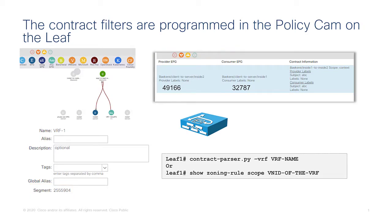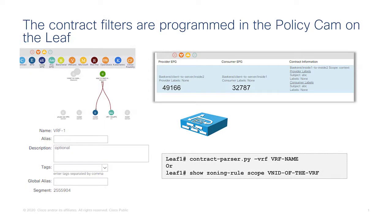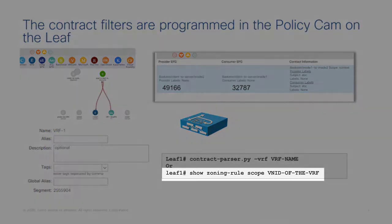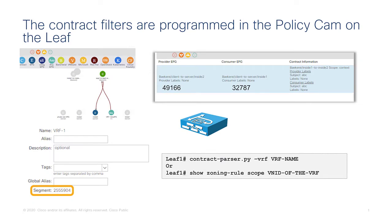There is a script you can use per leaf that makes life easier because it does the mapping between class ID numbers and EPGs for you. Otherwise, the command often used for troubleshooting policy programming requires the VRF segment ID number as well as the class ID numbers of the EPGs.